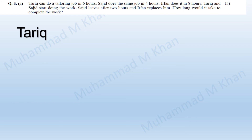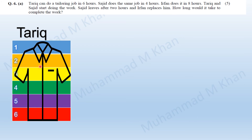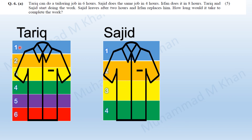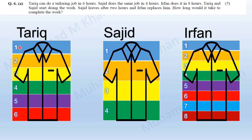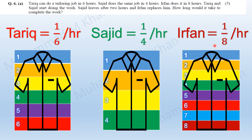Part A was about a tailoring job. Tariq does the tailoring job in 6 hours. If we divide the tailoring job into 6 equal portions, then Tariq is doing 1/6th of the job in one hour. Similarly, Sajid does the same job in 4 hours, so he does 1/4th in one hour, and Irfan does it in 8 hours, so he does 1/8th of the job in one hour.